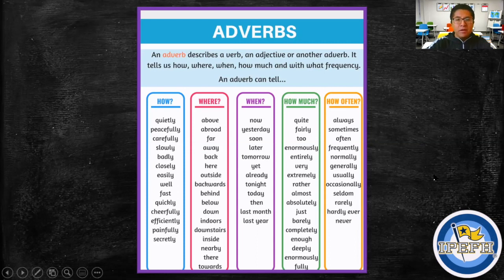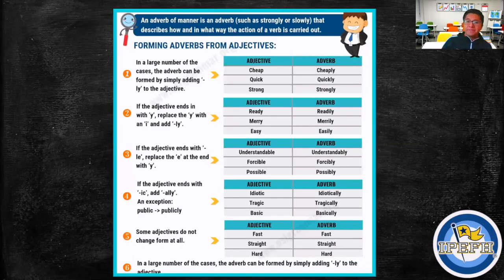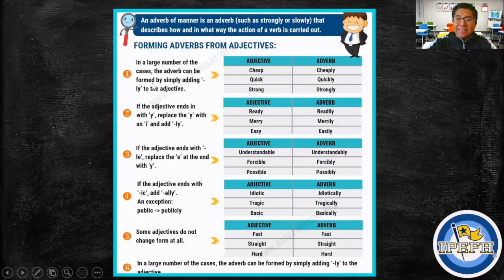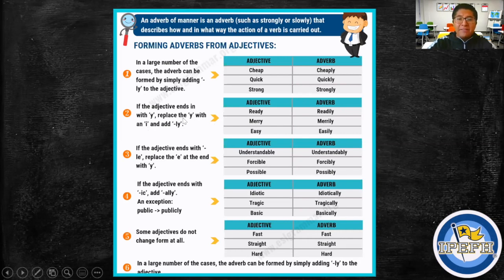So how do we form adverbs? Number one: in a large number of cases, the adverb can be formed by simply adding -ly to the adjective. For example: quick → quickly, strong → strongly. Number two: if the adjective ends with -y, replace the y with an i and add -ly.